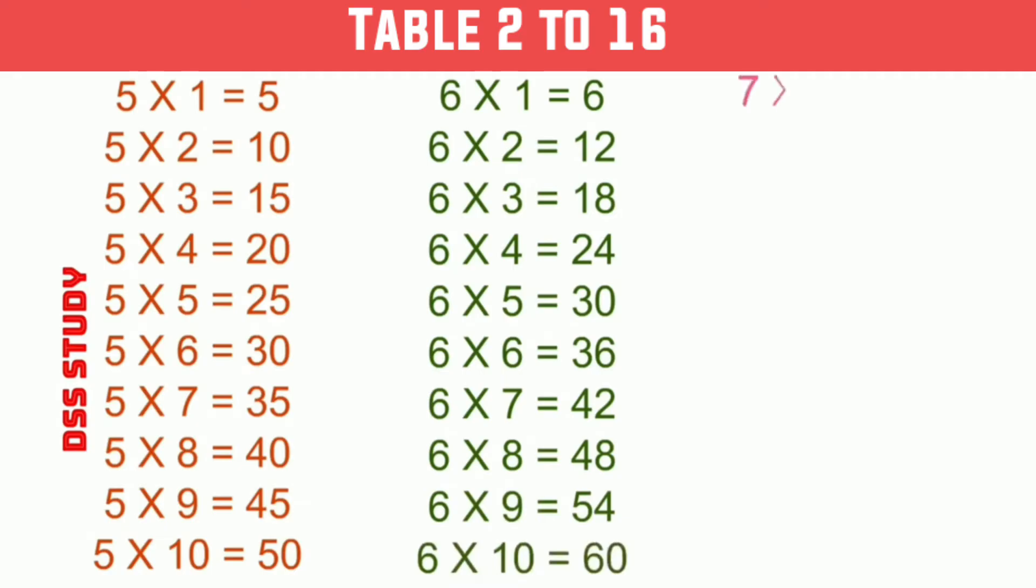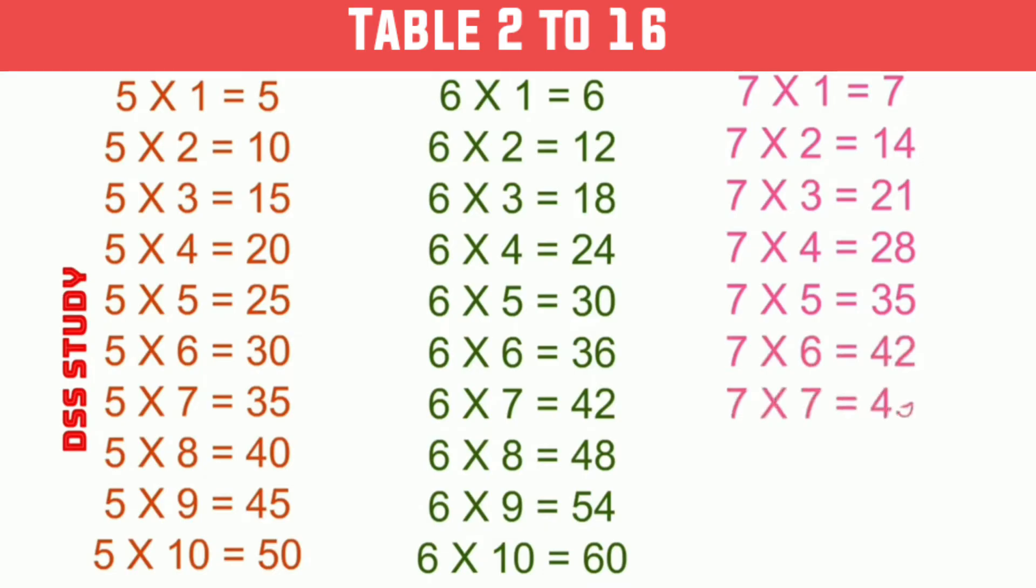7 times 1 is 7, 7 times 2 is 14, 7 times 3 is 21, 7 times 4 is 28, 7 times 5 is 35, 7 times 6 is 42, 7 times 7 is 49, 7 times 8 is 56, 7 times 9 is 63, 7 times 10 is 70.